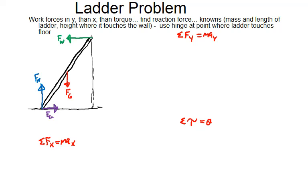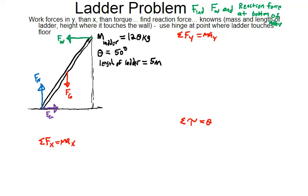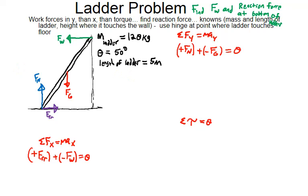Now let's look at the forces in x, y, and torque. Our goal is to find the wall force and the reaction force at the base — the combination of normal force and friction. Let's say the mass of the ladder is 120 kg, the angle it makes is 50 degrees, and the length is five meters. In the x-direction, friction is positive and wall force is negative — they balance. In the y-direction, normal force and gravity balance.